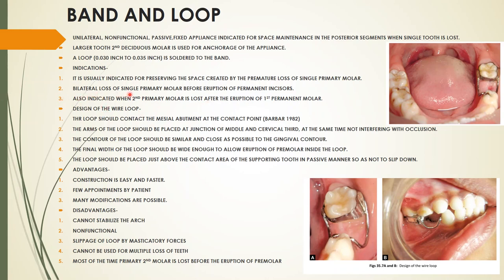After the eruption of the permanent incisors in a bilateral loss case, the lingual arch is used instead. Band and loop is also indicated when the second primary molar is lost after eruption of the first permanent molar — the band is then placed on the permanent molar.